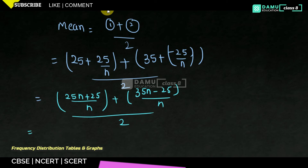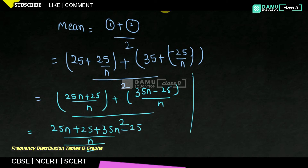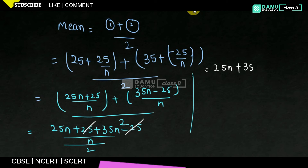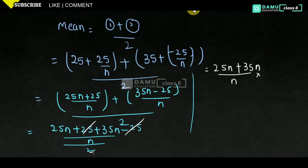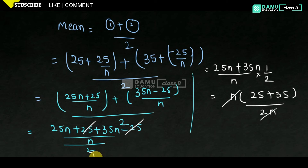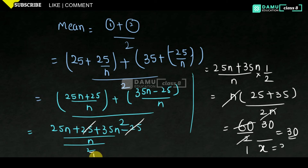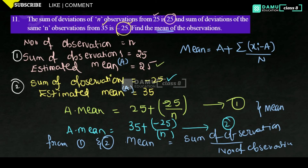Simplifying: 25n plus 35n gives 60n, and 25 minus 25 cancels. So we get 60n divided by n, divided by 2, which gives 60 divided by 2, equal to 30. Therefore x-bar, the mean, will be equal to 30.